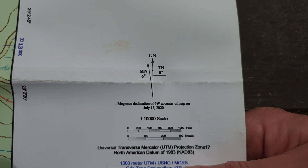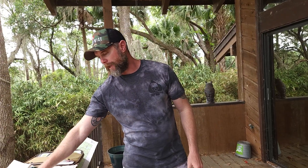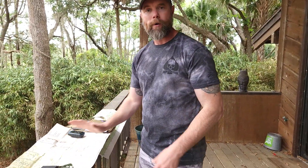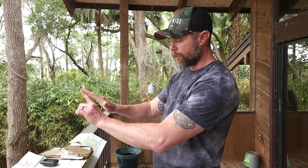Grid North is when we take the grid system and lay it down on the map. That might not line up with True North, because depending on where you are in the world — the world is not flat. So even though you have a flat map, when you take the map and try to lay it on the world, it's not exact — it's not an exact square or rectangle. So our True North line may not line up with our Magnetic North or our Grid North line.